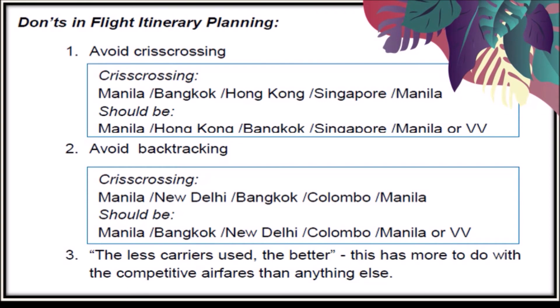The don'ts in flight itinerary planning. Number one: avoid crisscrossing. What is crisscrossing? For example, Manila, Bangkok, Hong Kong, Singapore, Manila — this is not correct. It should be Manila, Hong Kong, Bangkok, Singapore, Manila, or vice versa. You have to be knowledgeable of the countries offered in flight itinerary planning.